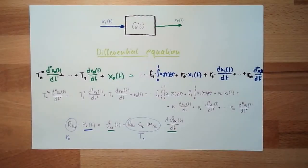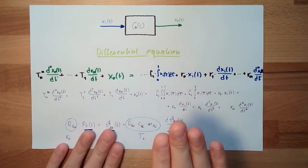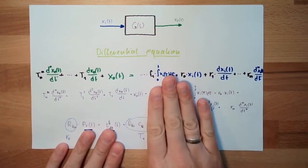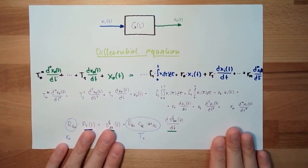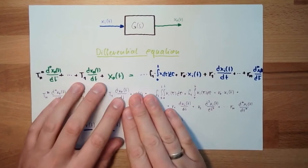Hello, and welcome back to our last video about standard elements. A beautiful standard element we hear at the end is a delay system second order. Remember this one? This was the Bayes equation, the Bayes differential equation.